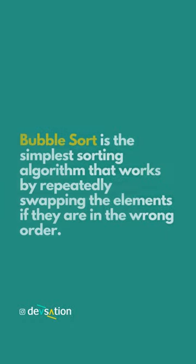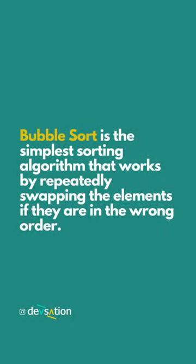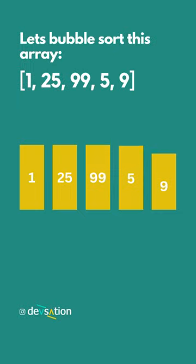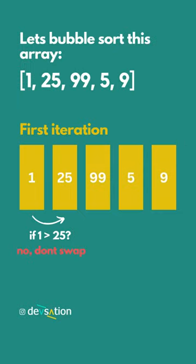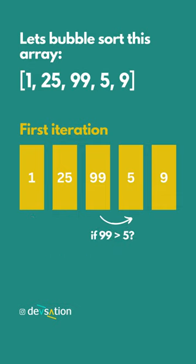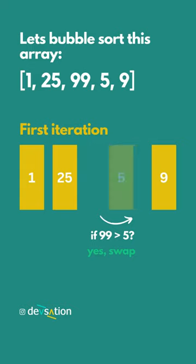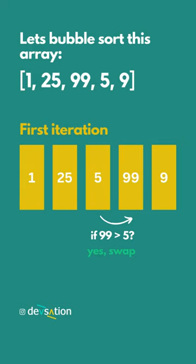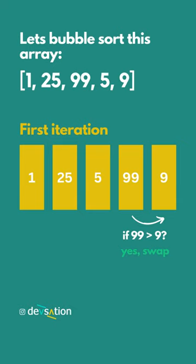Bubble sort is the simplest sorting algorithm that works by repeatedly swapping the elements if they are in the wrong order. On each iteration we compare two neighbor elements and swap if the first one is greater than the second one.